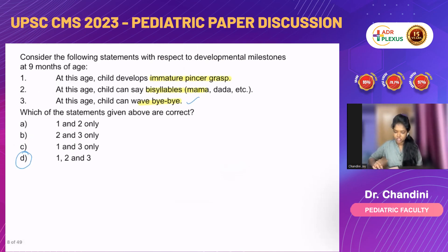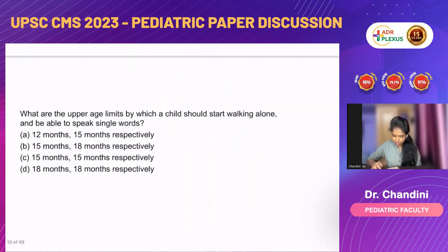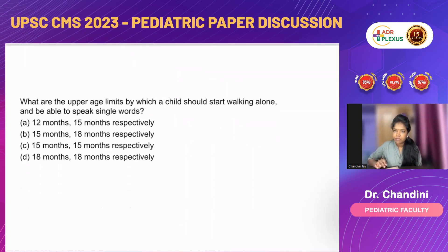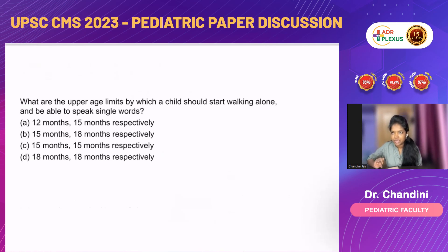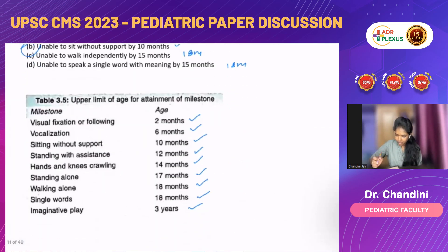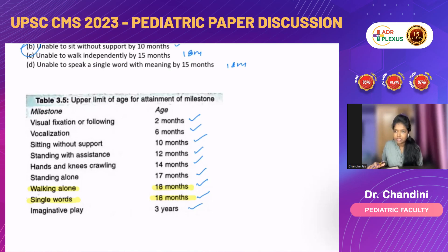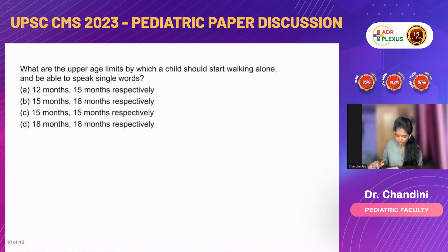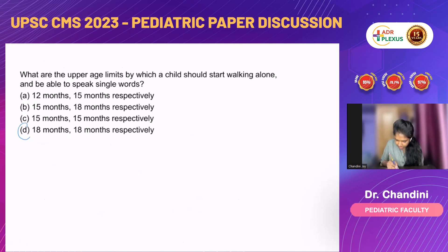Next question: what are the upper age limits by which a child should start walking alone and be able to speak single words? As just seen in the upper age of attainment slide, walking alone is 18 months and speaking single words is also 18 months. So the right answer is option D — 18 months and 18 months respectively.